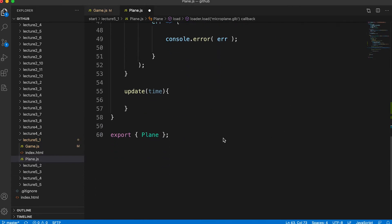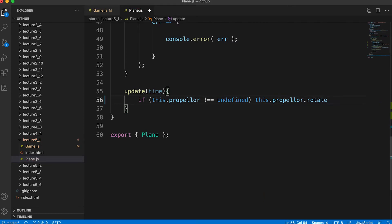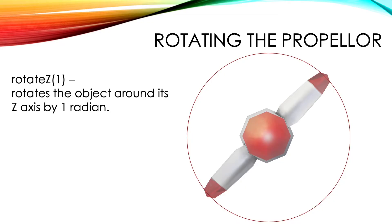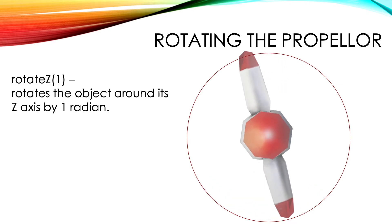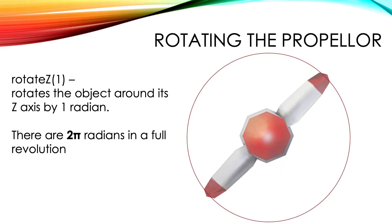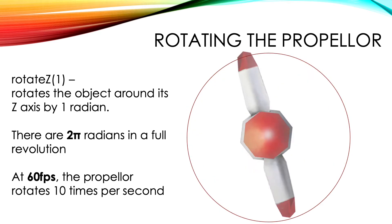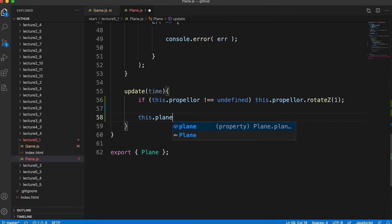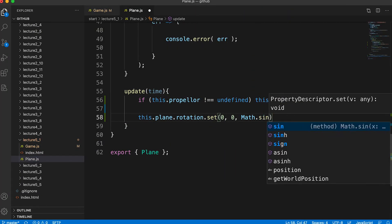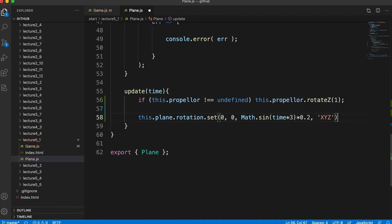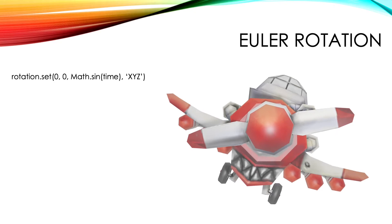It just remains to write the update code, which is called by the game's render method. It receives an elapsed time parameter. We first rotate the propeller using the rotateZ method — rotateZ rotates the object around the z-axis by one radian. There are two pi radians in a revolution, so the propeller completes a revolution in about six frame updates. Since the target FPS is 60, this means the propeller rotates about 10 times a second. Now we want the plane to gently sway about the z-axis, and for this we're going to set the z component of the rotation property.